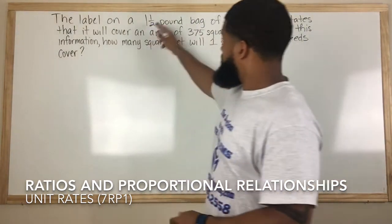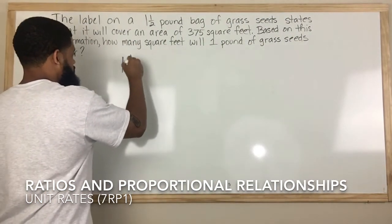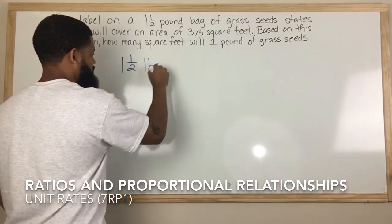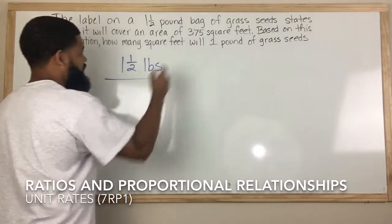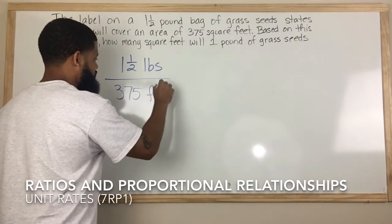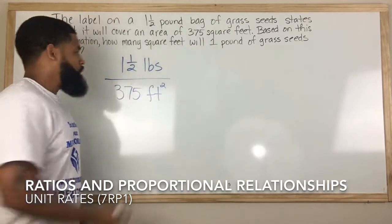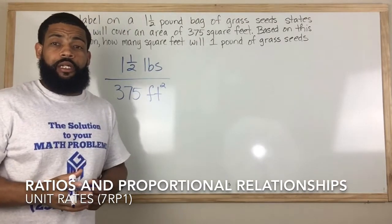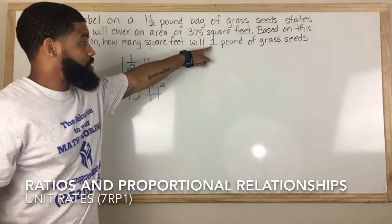For one and a half pounds of grass seed, we're going to write one and a half lbs, and that covers 375 square feet — so we'll put feet squared. Now this is a ratio. We need to take this ratio and break it down because we want to know how many square feet one pound of grass seed will cover.